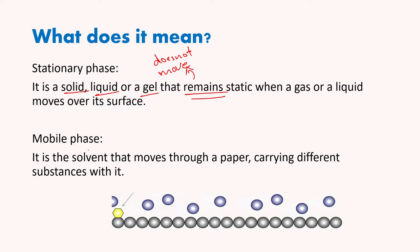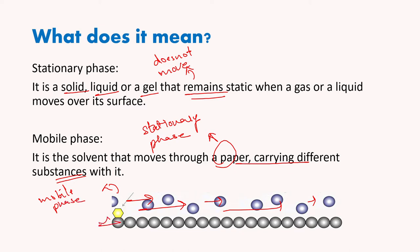The mobile phase is the solvent that moves through the stationary phase, moves through a paper carrying different substances in it. Here, instead of paper, we could say stationary phase. The substances are in a mobile phase, whereas the surface over which they move is not moving, and that is why it is called stationary phase.